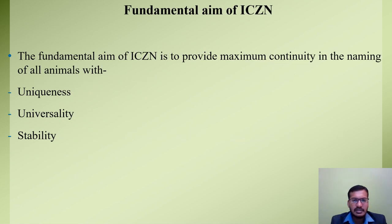The second part of our topic is the Fundamental Aim of ICZN. The fundamental aim of ICZN is to provide maximum continuity in the naming of all animals by providing uniqueness, universality, and stability. Uniqueness means the name of an animal taxon should be different from other animal taxa. Universality refers to global acceptance of the name. Stability means once a taxon is provided with a valid name, it should not be changed over time.